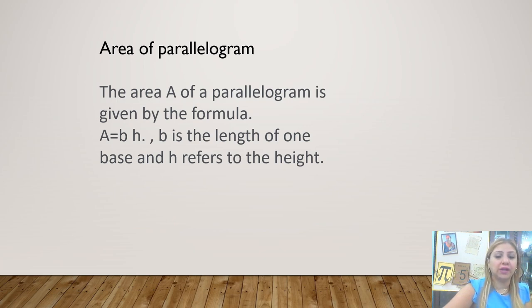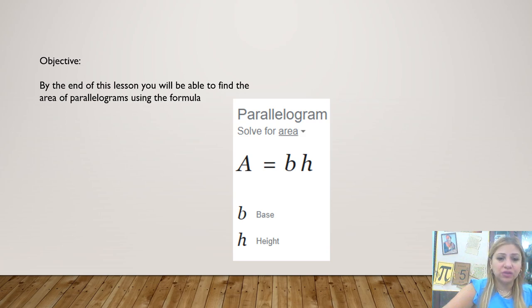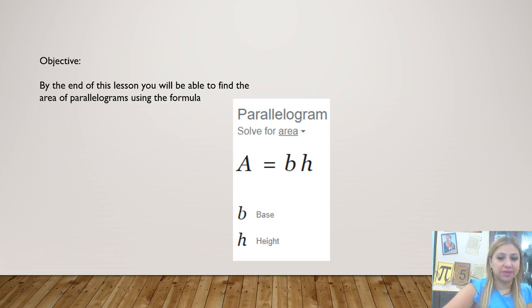We will also learn about area of parallelograms. The area of a parallelogram is given by the formula: area equals base times height. B is the length of one base, and H refers to the height. By the end of this lesson, you will be able to find the area of parallelograms using the formula: area equals base times height. B is for the base, H is for the height.